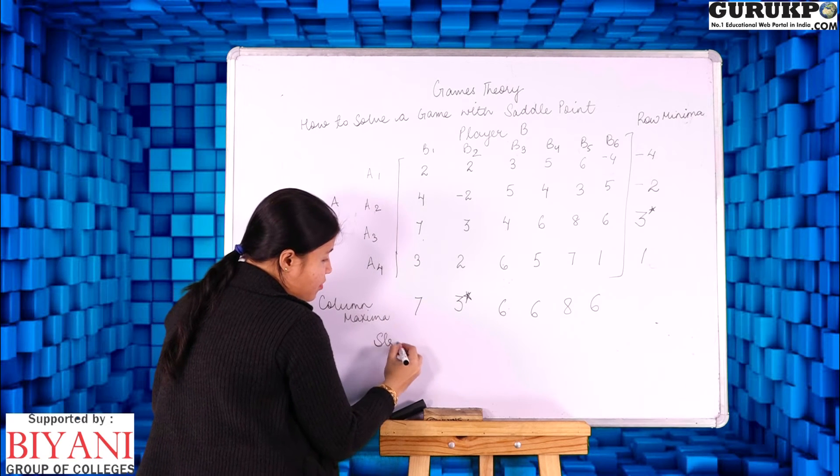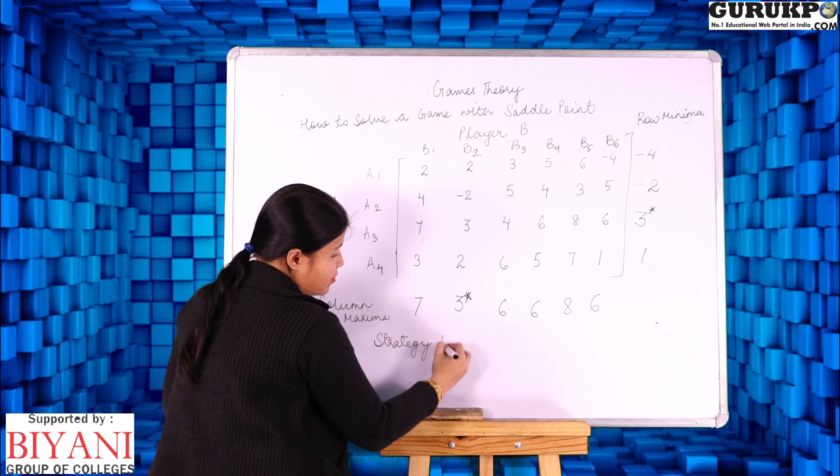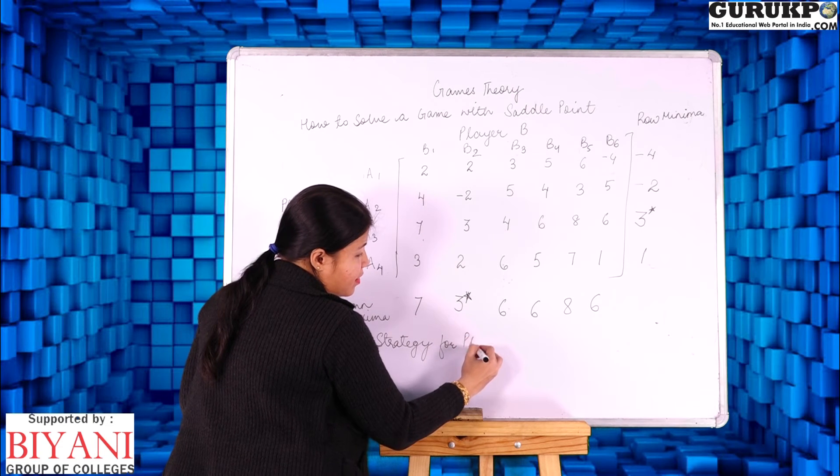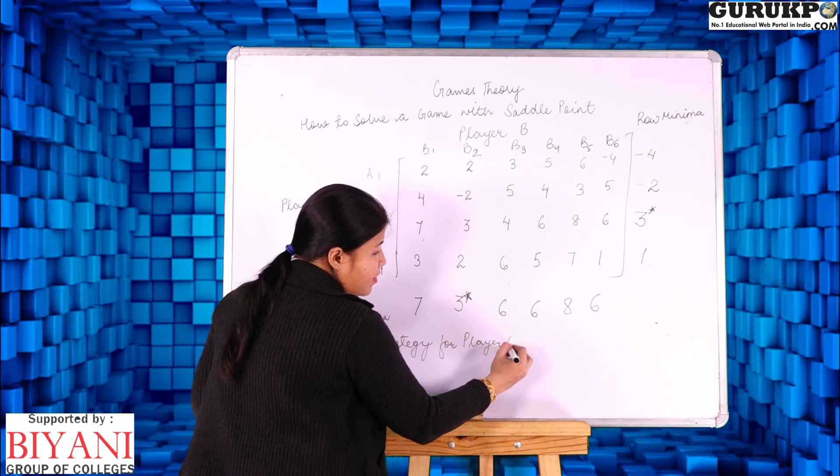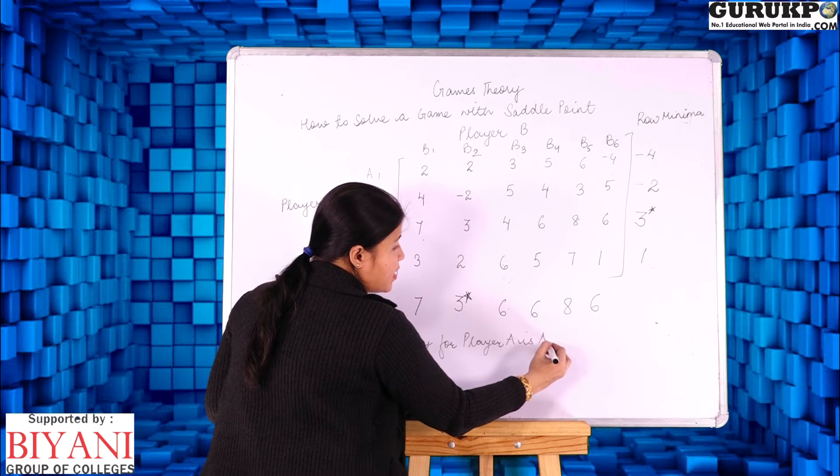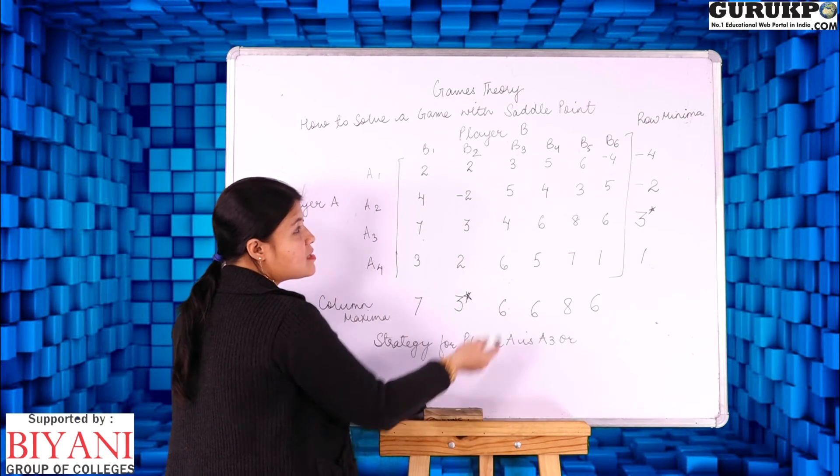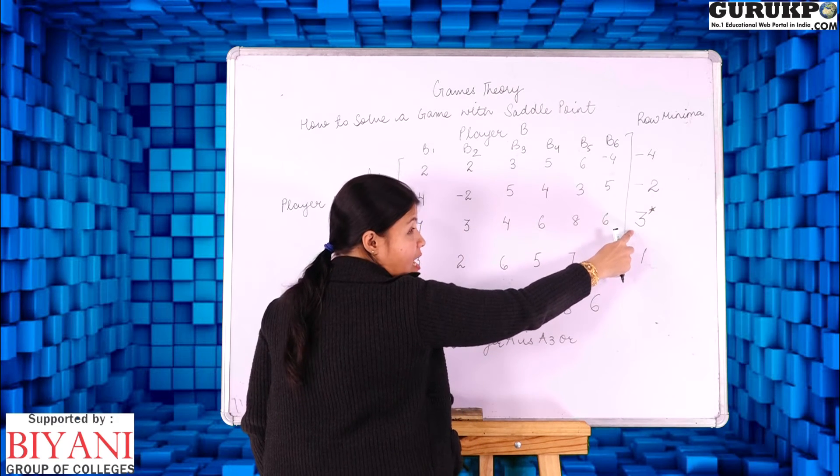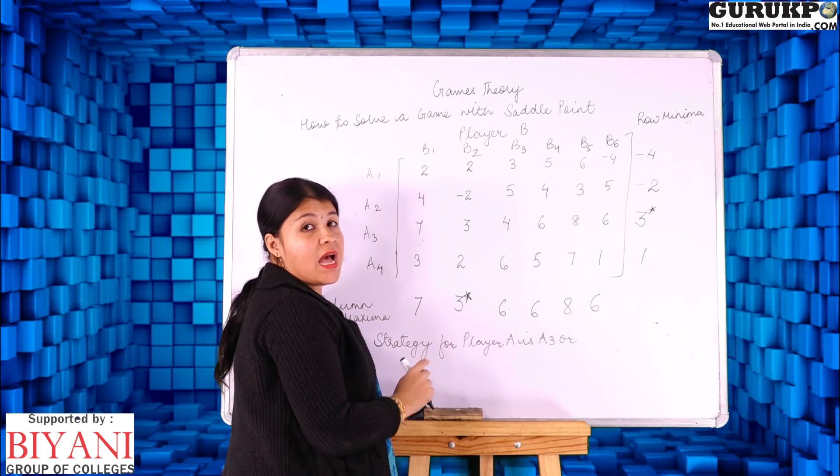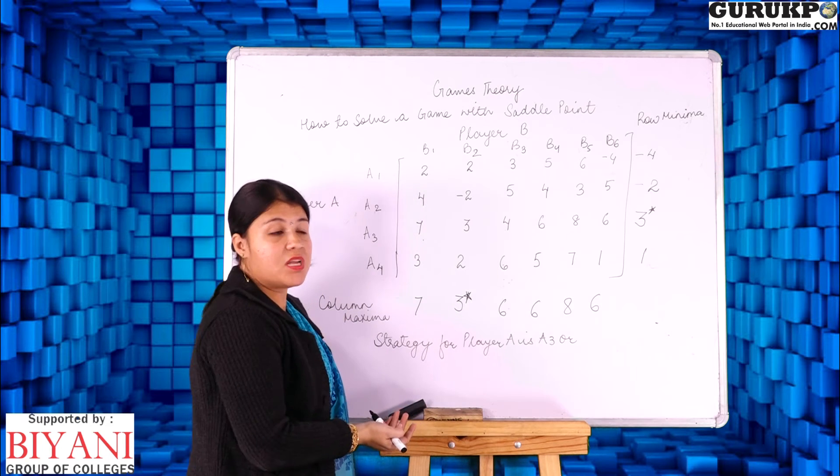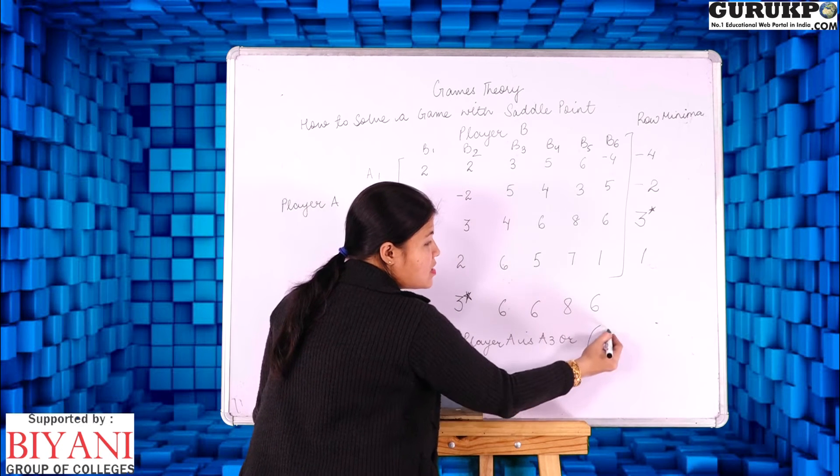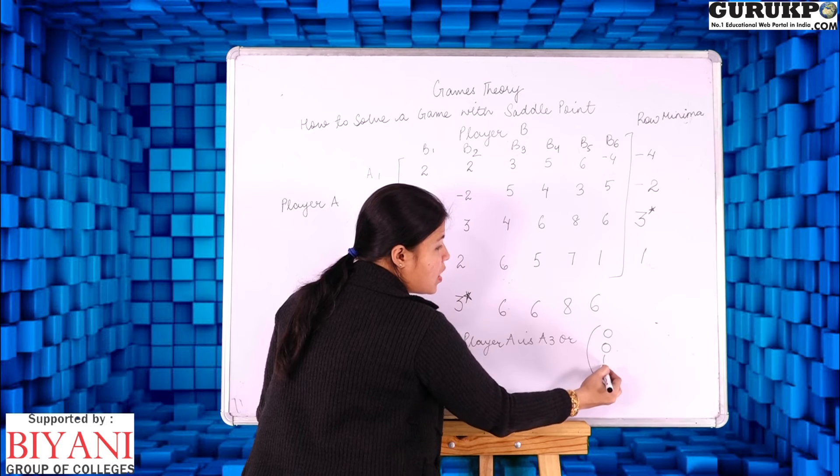So the strategy for player A is A3 or we can write it in another way like this. Here where there is saddle point we have to indicate 1 and in rest of the places we have to indicate 0. Another way is 0, 0, 1, 0.